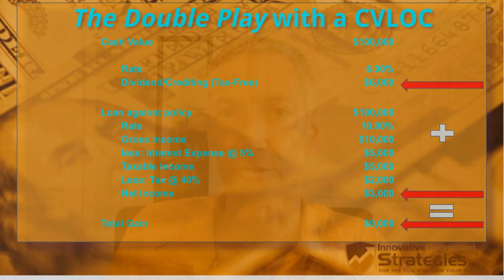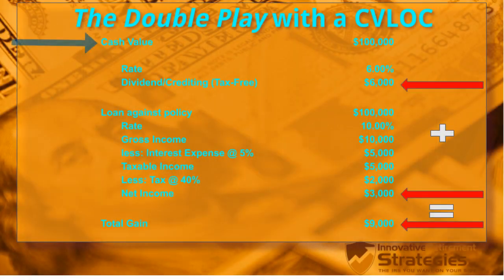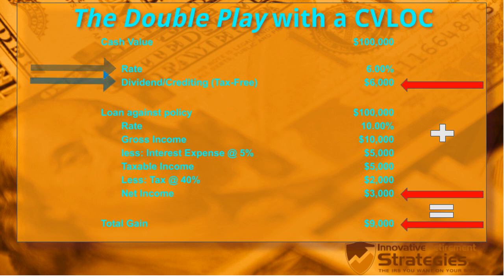Now we're looking at the Double Play using a cash value line of credit. Just as in the last example, we're assuming the life insurance policy has at least $100,000 of cash value to borrow against. On the life insurance side, there's the same 6% dividend — $6,000 — credited to the policy, so it finishes the year with $106,000 of cash value.